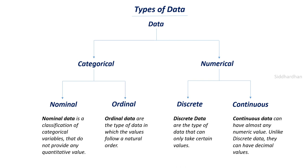Continuous data can have almost any numerical value — unlike discrete data, they can have decimal values. For example, the weight of an object can be 30.5 kilograms, so decimal values are possible. These are the four main classifications of data: nominal data — just categories with no order; ordinal data — categories with a natural order; discrete data — numerical data that cannot take decimal values; and continuous data — numerical data that can take decimal values like weight.